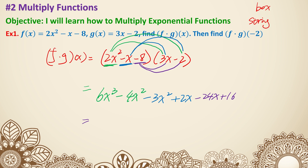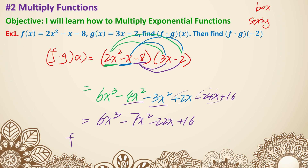Now it's time to simplify and combine like terms: 6x cubed, minus 7x squared, and then plus 2x and negative 24x gives minus 22x, and plus 16. As you can see, when you have a 3-term multiplied with 2 terms, drawing the strings can get more confusing. So maybe the box method will be visually clearer for this. But now let's plug in.